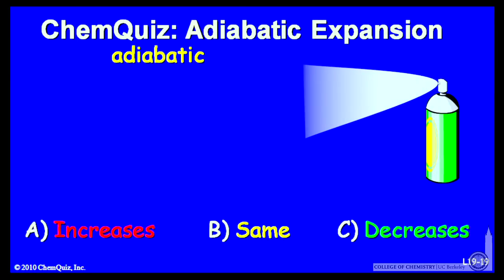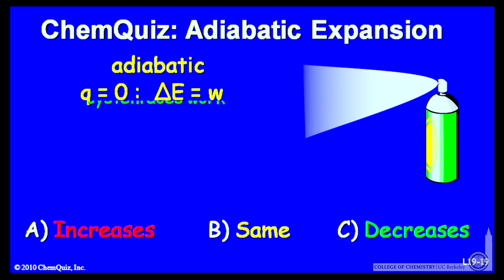So in this situation, it's adiabatic. It's adiabatic because it's done quickly. There's just no time for the heat to flow. So Q is 0, but the system does work. It pushes back the atmosphere.